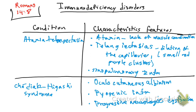A quick note about pyogenic infections: a pyogenic infection is an infection that is producing pus. The most common bacteria involved are Staphylococcus and Streptococcus, which cause pus formation when they infect tissue. Those are the most common bacteria that can cause this.